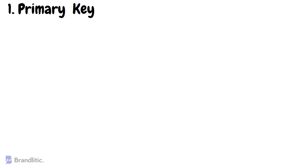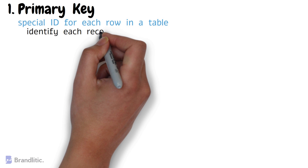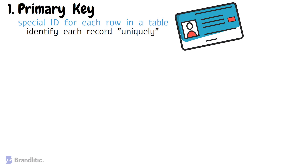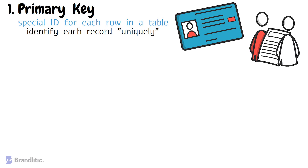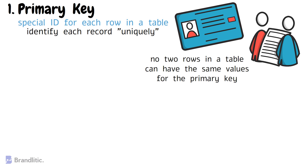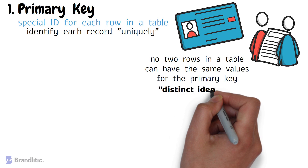Number one: what is a primary key? In simple terms, a primary key in a DBMS is like a special ID for each row in a table. It's a column or a set of columns that help us identify each record uniquely. You can think of it as a primary identifier, just like your own unique ID number. Just as no two people can have the same ID number, no two rows in a table can have the same values for the primary key, ensuring that each record has a distinct identity.